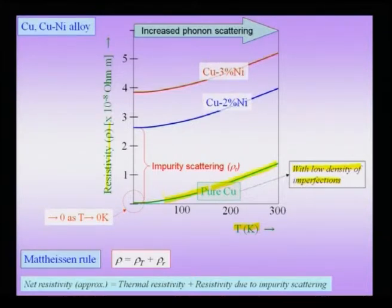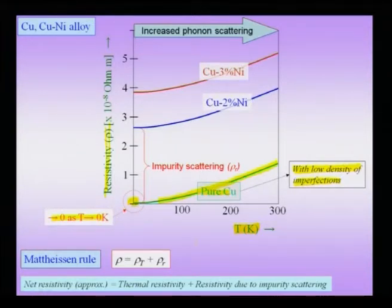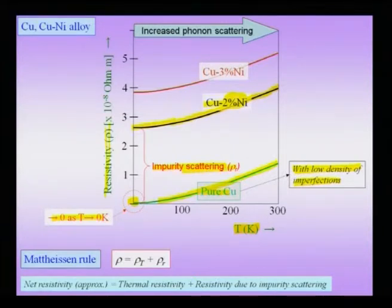For pure copper with low density of imperfections, plotting resistivity as a function of temperature shows that with decreasing temperature, phononic scattering reduces and resistivity keeps decreasing — conductivity increases continuously. As you tend to 0 Kelvin, the material would tend towards a superconductor since there are no phononic scatterings and no lattice defects. However, for a copper-nickel alloy, even though resistivity decreases with temperature, there is always a residual resistivity as we tend towards 0 Kelvin, coming from impurity scattering due to the alloying element nickel. As you increase the amount of alloying element, the residual resistivity increases further.